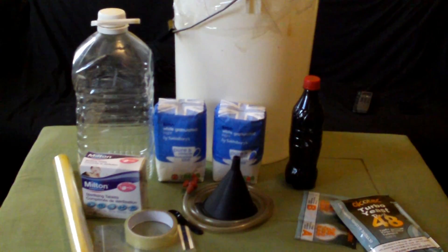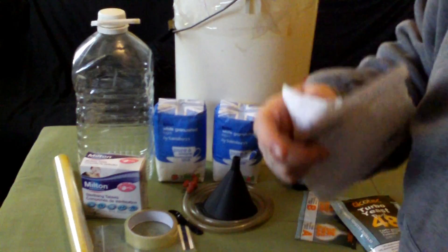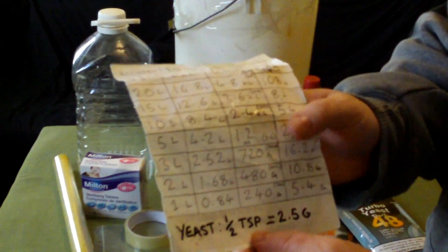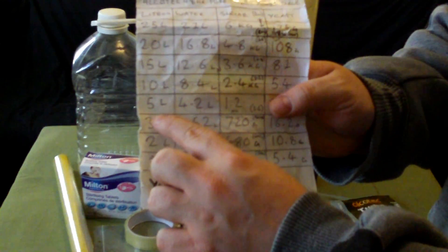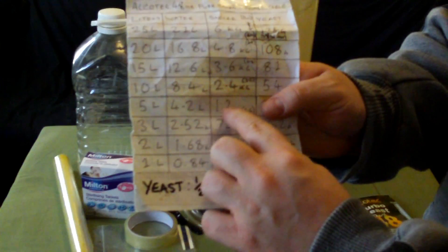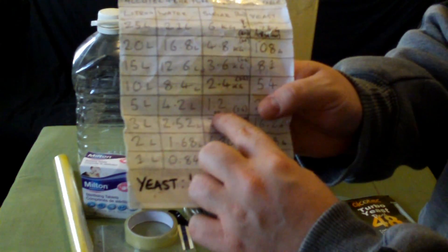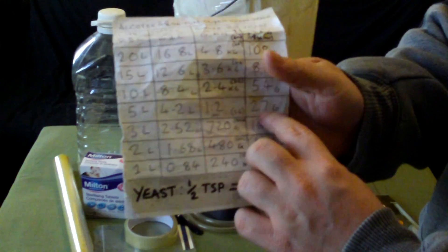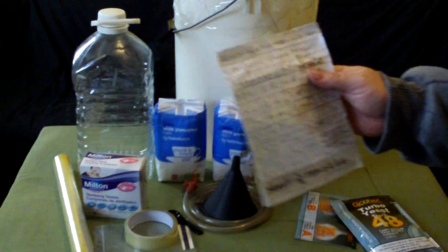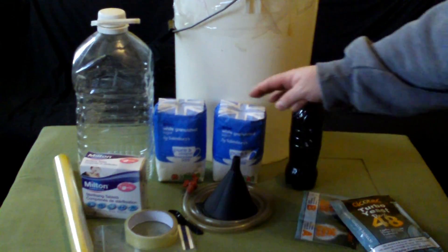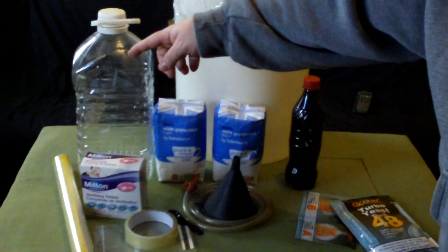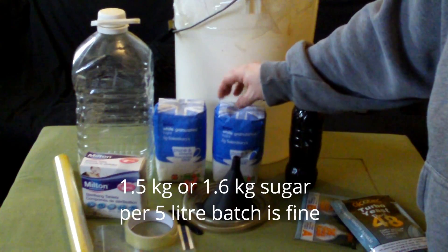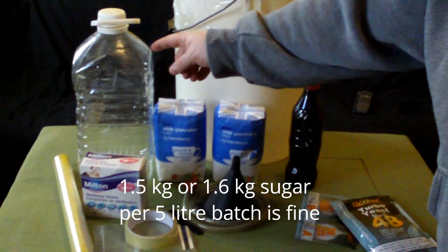So this is going to be a 5 liter batch. If you want to do more or less, I've got a table here that explains if you're doing 5 liters, you want 4.2 liters of water, 1.2 kilograms of sugar for the 14%, 1.6 for the 20%, and 27 grams of yeast. And the last thing obviously you want sugar. For 5 liters you want 1.6 kilograms. This is 2 kilograms, so you're not going to use all this.